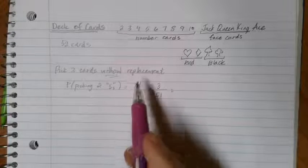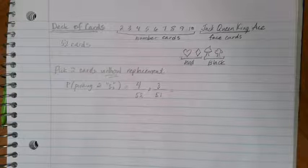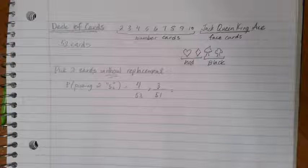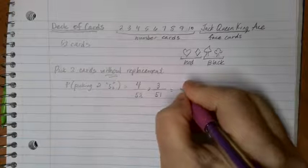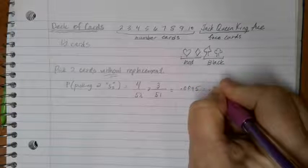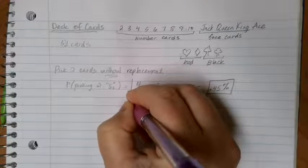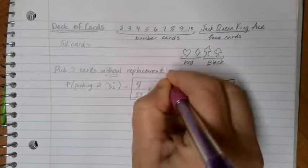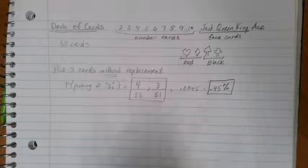So we have that conditional probability because we're not replacing. We figure out the probability of the first one and then use that to decide how the probability of the second pick is going to be affected. With that in mind, we can go ahead and do 4 over 52 times 3 over 51, and we end up with 0.0045 or 0.45% chance of that happening. So the chance of getting two fives, one after the other in a shuffled deck is less than 1%.